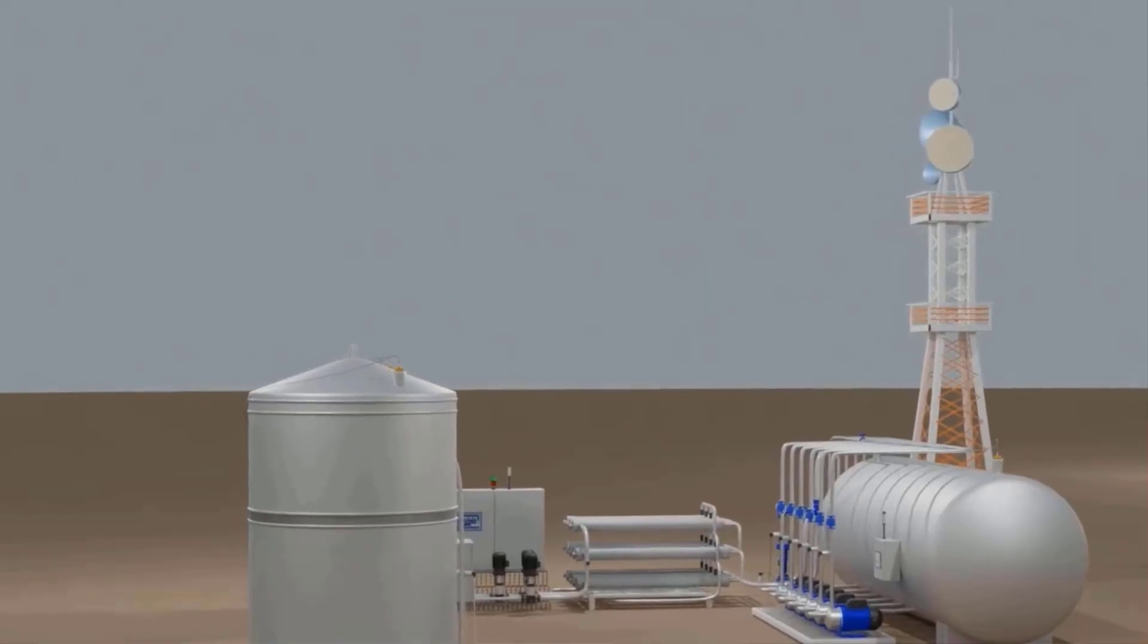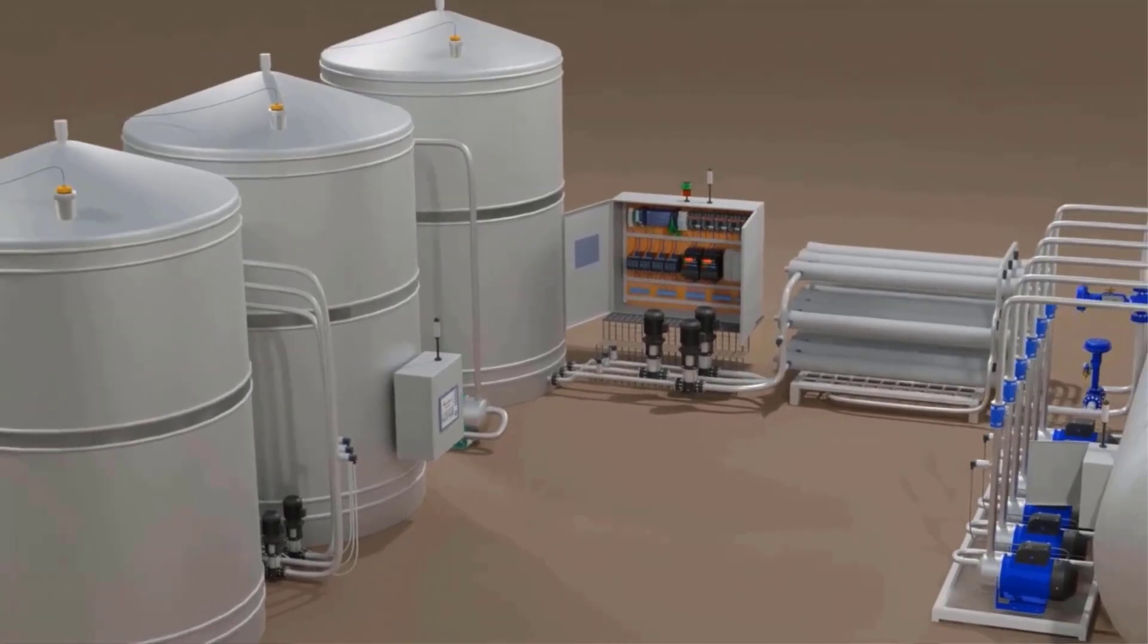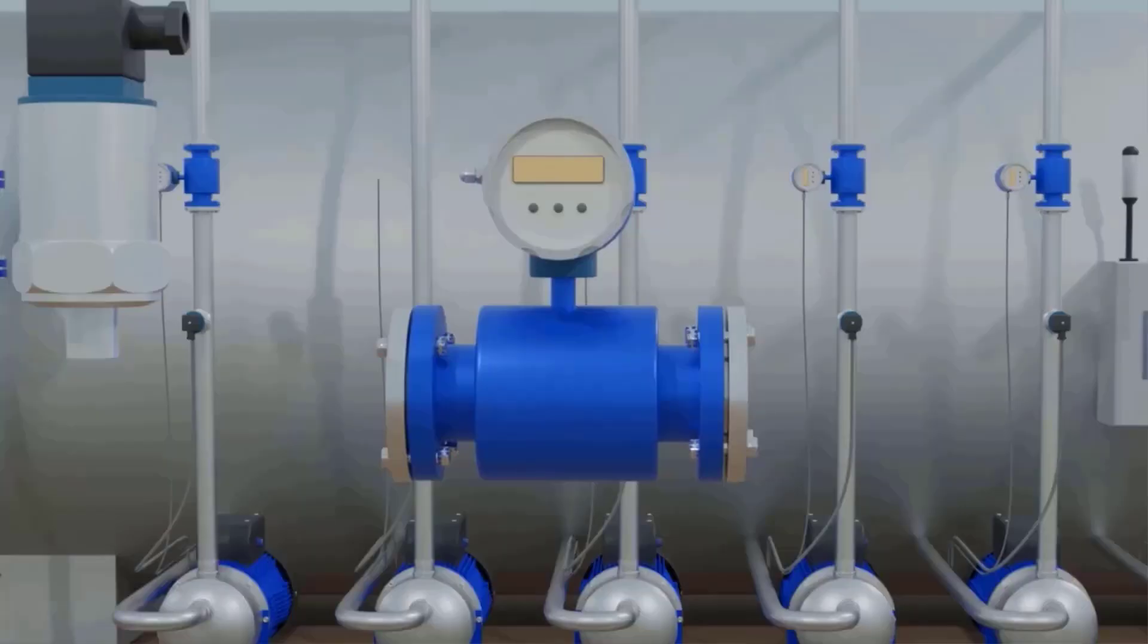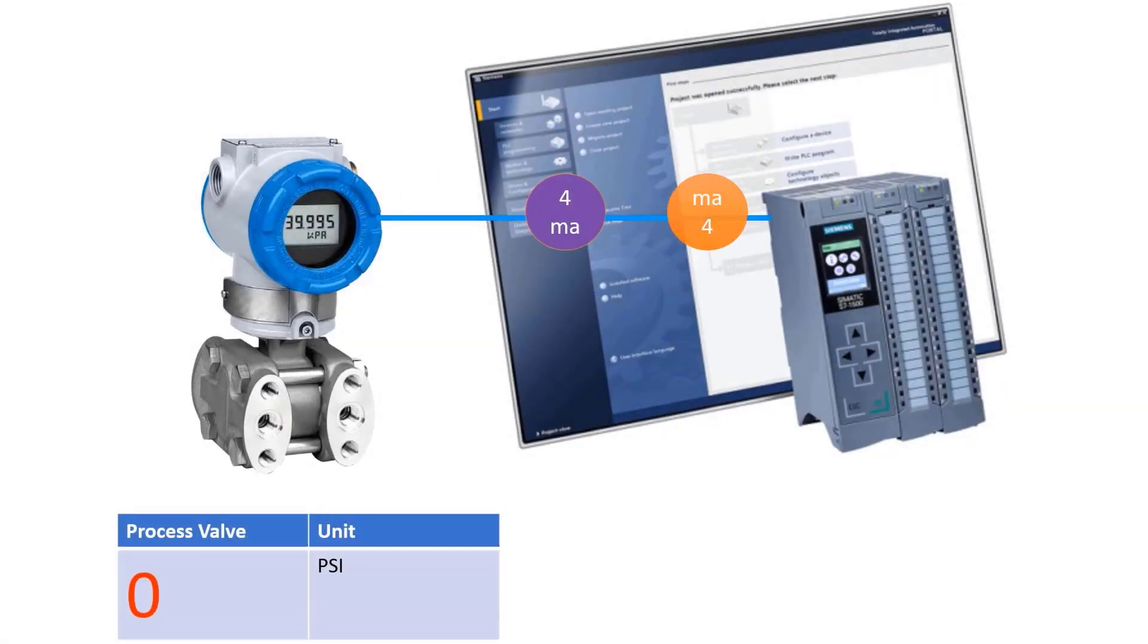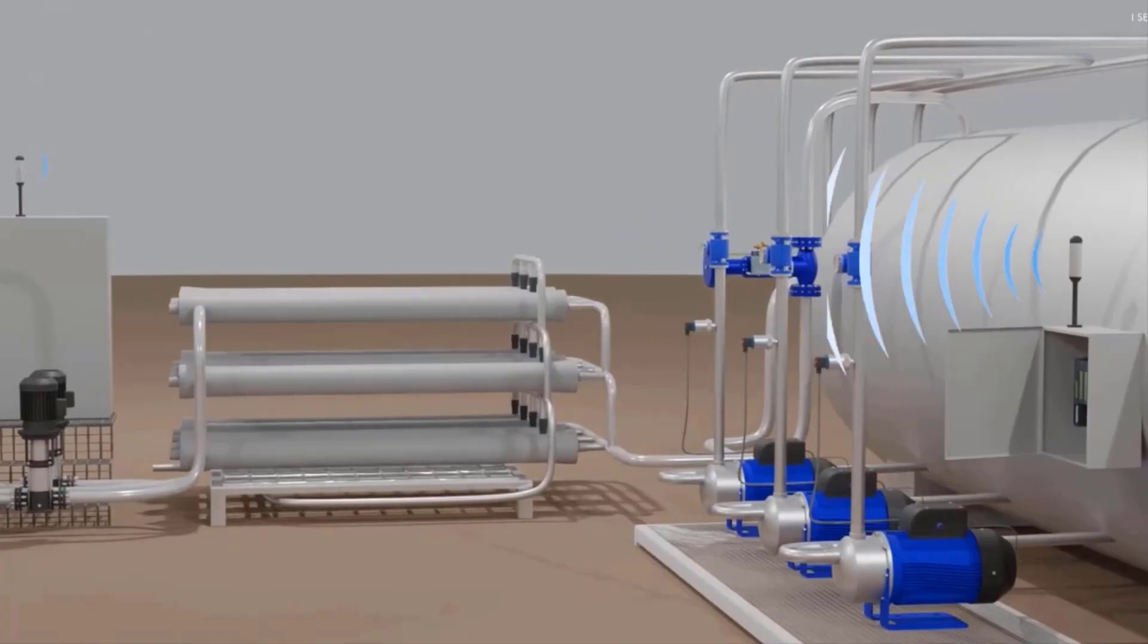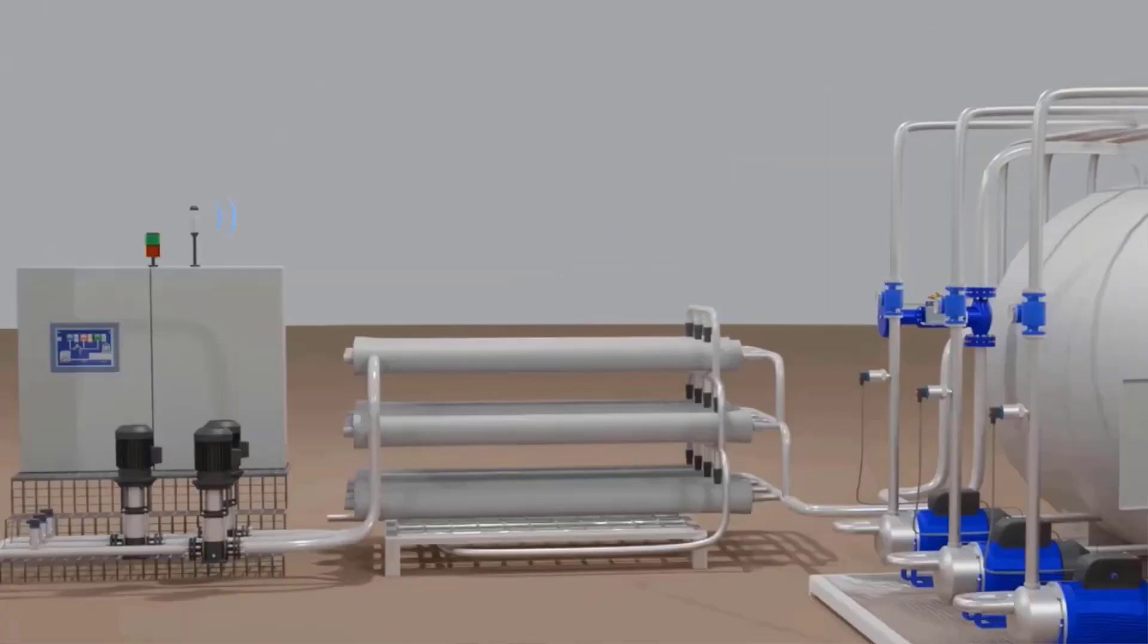What is a PLC? A PLC or Programmable Logic Controller is a specialized computer used to control machinery and industrial processes. It processes inputs from various sensors, makes decisions based on programmed logic, and sends outputs to control devices like motors, valves, or lights.